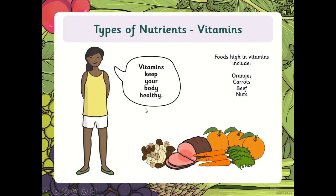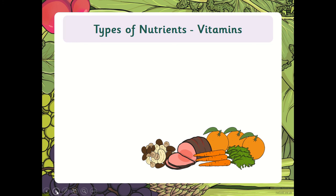Vitamins come mainly from your fruit and vegetables and they keep your body nice and healthy. They include oranges, carrots, beef, and nuts. Different foods contain different vitamins — so just because fruit and vegetables contain vitamins, they're not all the same. That's why we need to eat a variety of fruits and vegetables.